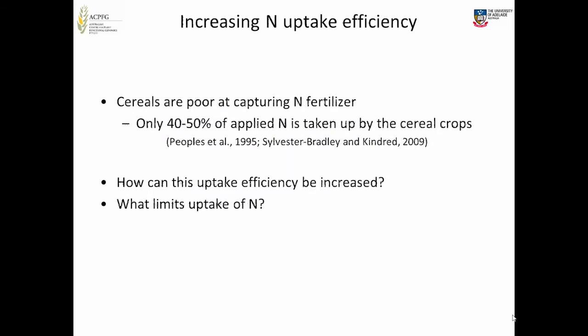Cereals are quite poor at capturing nitrogen fertiliser. A couple of meta-analyses have shown that only 40 to 50% of the applied nitrogen is actually taken up by a cereal crop. So we've been interested in how we can improve that uptake efficiency and what is limiting the uptake of nitrogen.